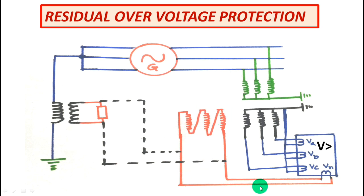Here if the residual over voltage occurs it will directly be fed to the relay. Now this relay is an over voltage type relay.